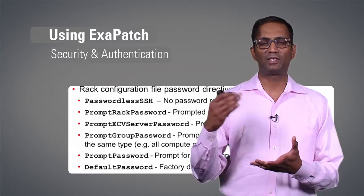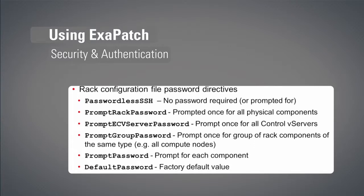Let's look at the security and authentication mechanisms ExaPatch provides. You can enable passwordless SSH among all components — no password required once keys are set up. Alternatively, 'prompt rack password' will prompt you for the password for all physical components once. Another option is 'prompt ECV server password,' which prompts for control VM passwords. You can also set up groups — for example, all compute nodes as one group with one password, all switches with another — using 'prompt group password.' The default 'prompt password' asks for each component individually as required. The default password uses the factory default value, which is welcome1.